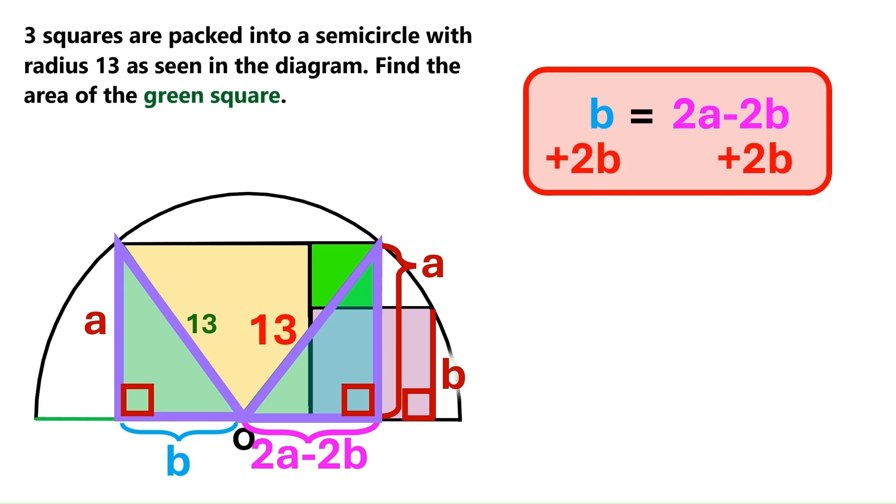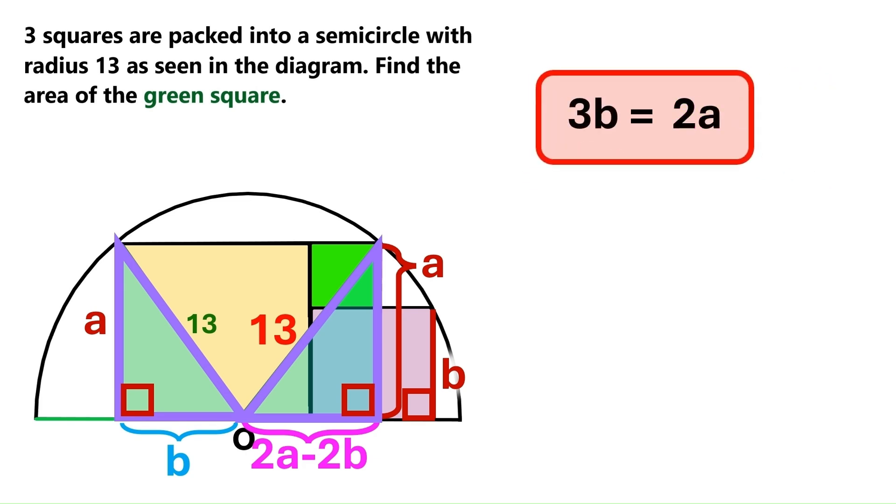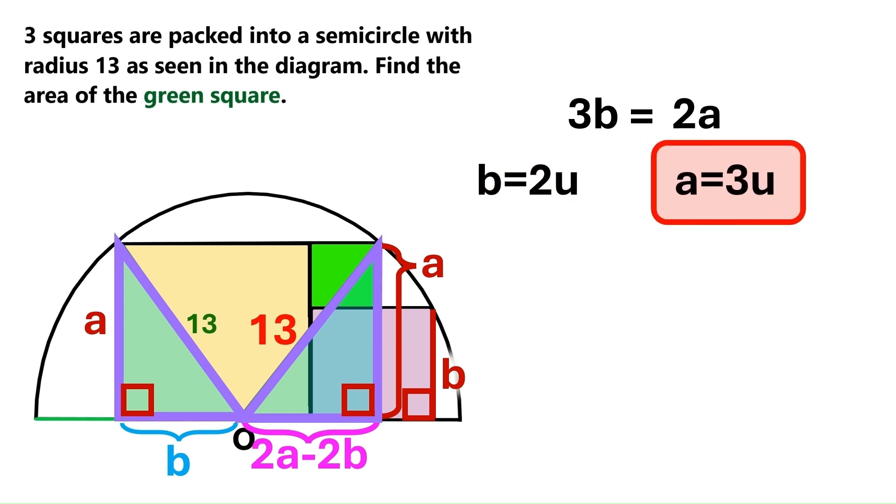Let's add 2b to both sides. And it turns out 3b equals 2a. So we can say if b is 2u, then a must be 3u.